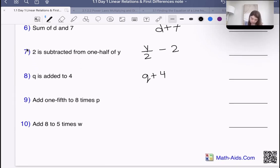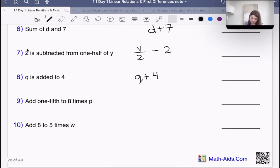Add one-fifth to eight times P. We start with eight times P, which is eight P. Then it says add one-fifth to eight times P, so we add one-fifth.